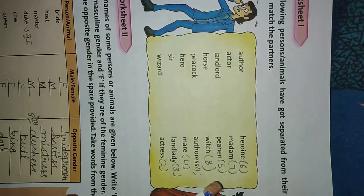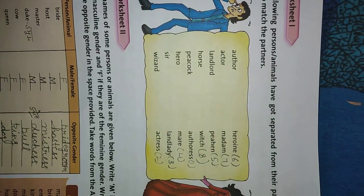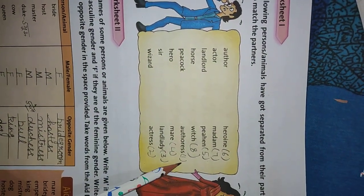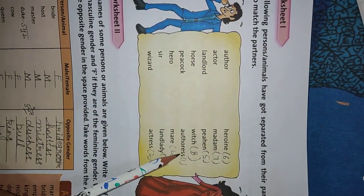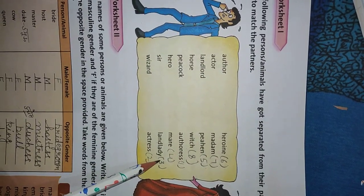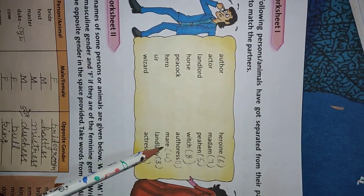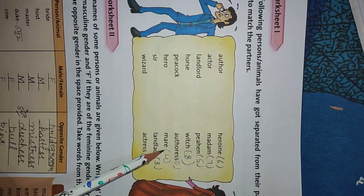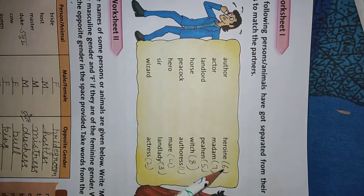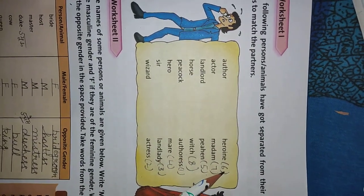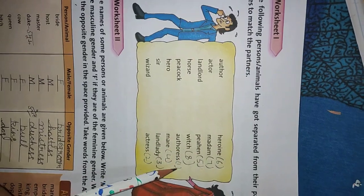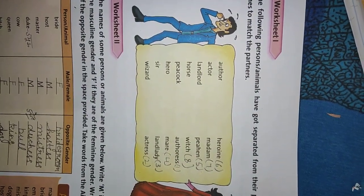Check the answers students. Here are your answers: First — Authoress. Second — Actress. Third — Landlady. Fourth — Mare. Fifth — Peahen. Sixth — Heroine. Seventh — Madam. Eighth — Witch.